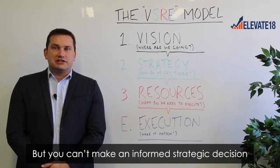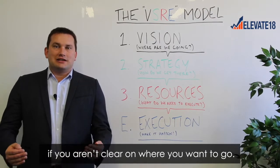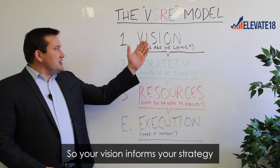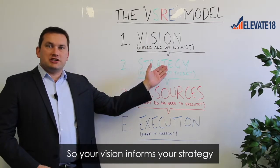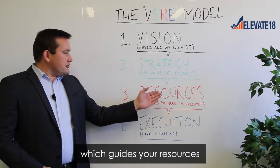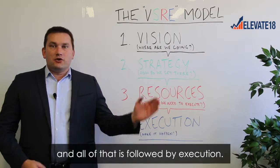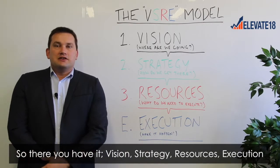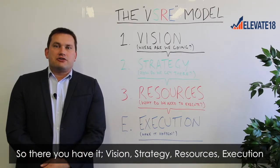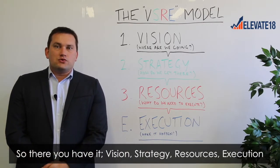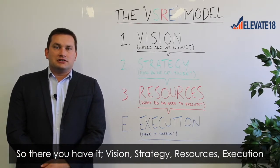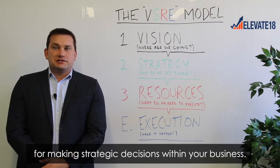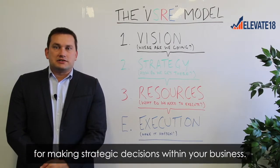You can't make an informed strategic decision if you aren't clear on where you want to go. Your vision informs your strategy, which guides your resources, and all of that is followed by execution. So there you have it — Vision, Strategy, Resources, and Execution: a logical framework for making strategic decisions within your business.